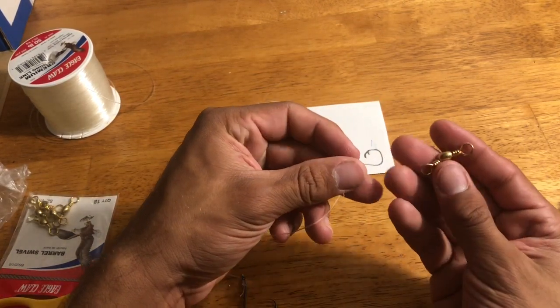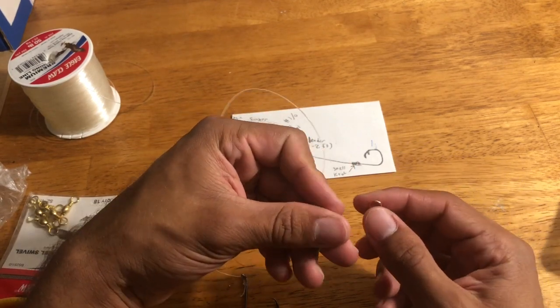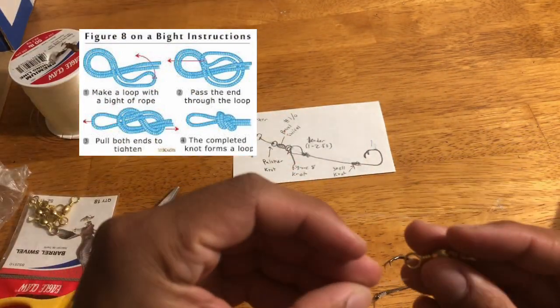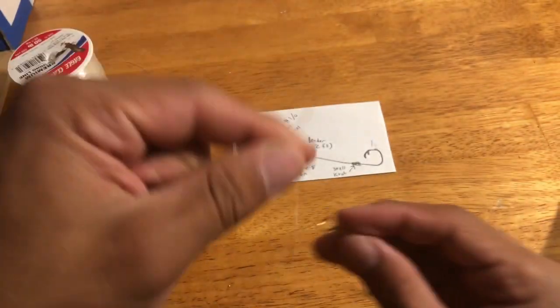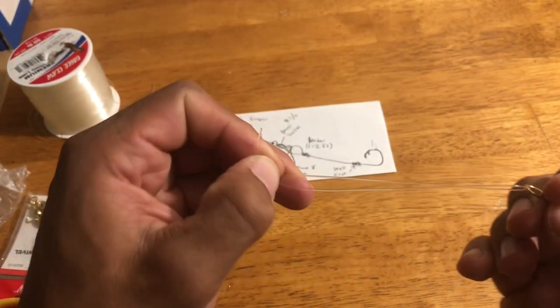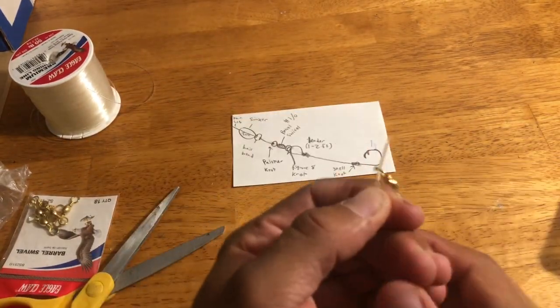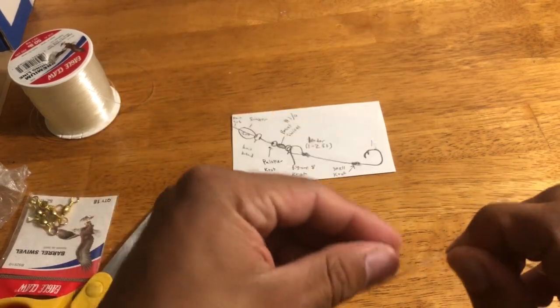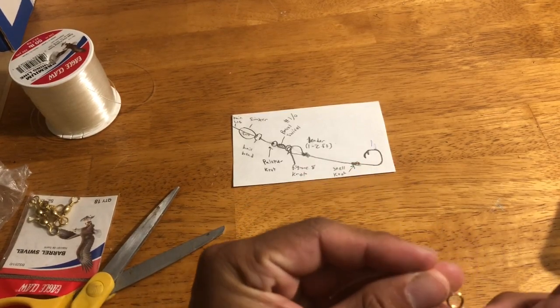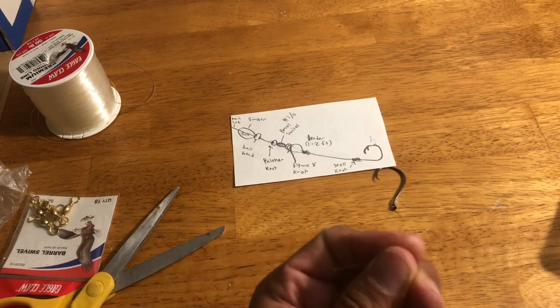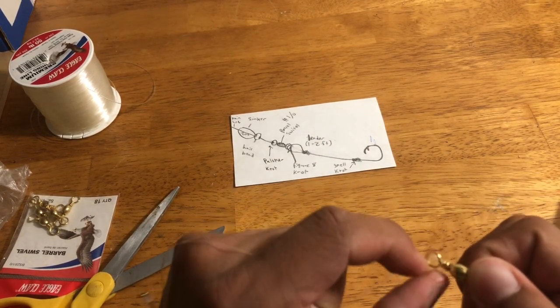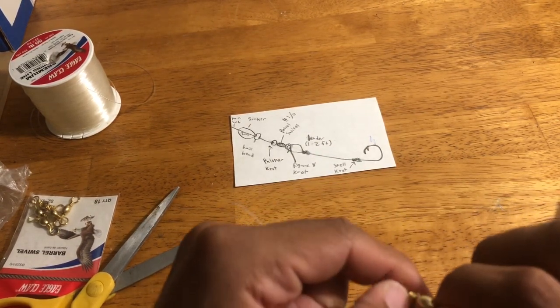So for the leader, like I mentioned earlier, we're going to make the figure eight knot. So you're going to take the last tag end or other end, you're going to make a little loop. And make sure you get it through the barrel.